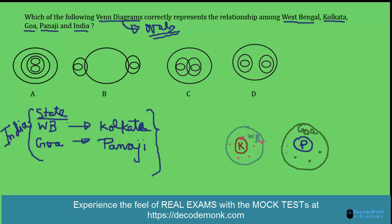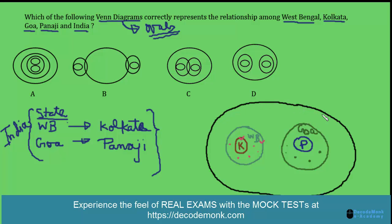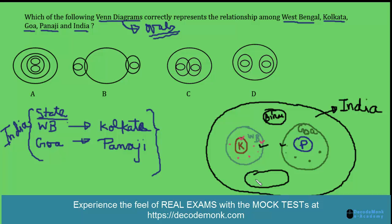We know that all these places — West Bengal, Kolkata, Goa, and Panaji — are inside one big set called our country India. Panaji is inside Goa, and Kolkata is inside West Bengal. These two circles will not intersect because West Bengal and Goa are separate places. Inside India there may be other circles representing other states like Bihar and Madhya Pradesh.